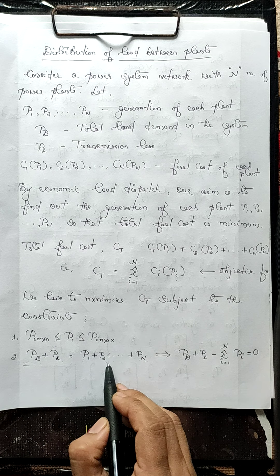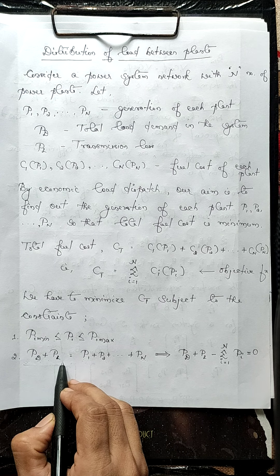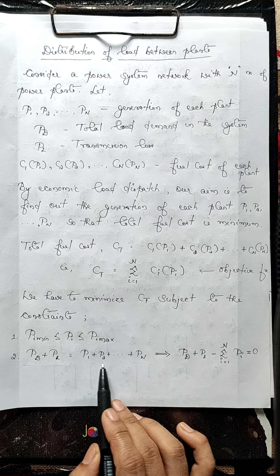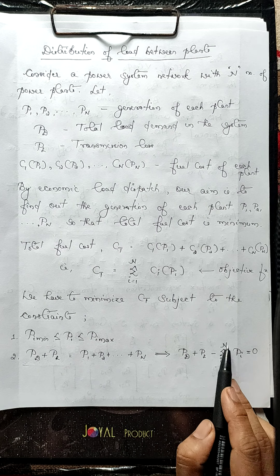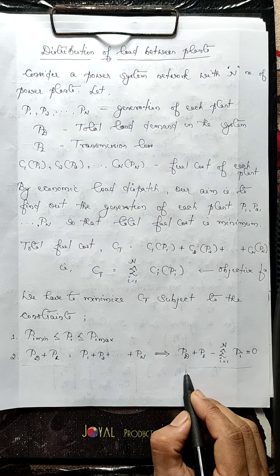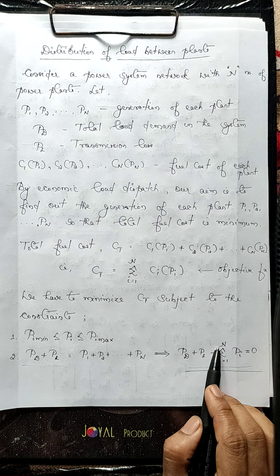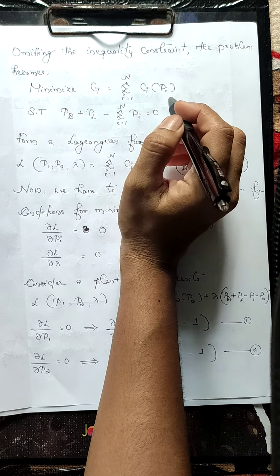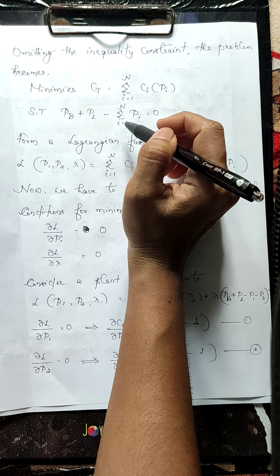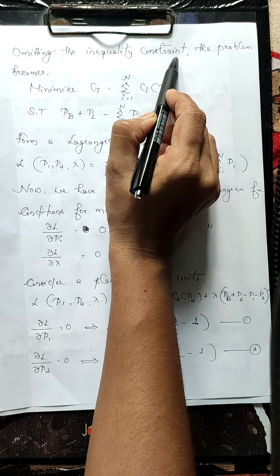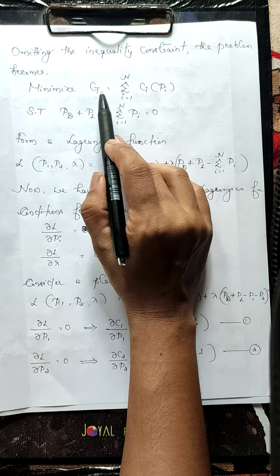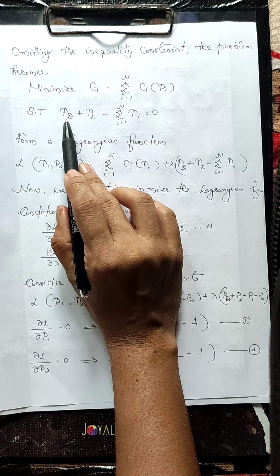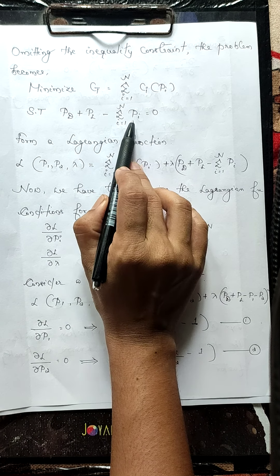So the total generation should equal total load demand plus total power loss: PD + PL - (P1 + P2 + ... + PN) = 0, which can be generalized as PD + PL - summation(Pi) for i = 1 to N = 0. For the time being we will consider only the equality constraint. Omitting the inequality constraint, our problem becomes: minimize CT = summation of Ci(Pi) subject to PD + PL - summation(Pi) = 0.